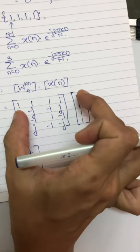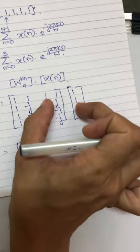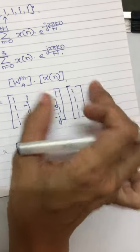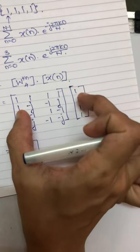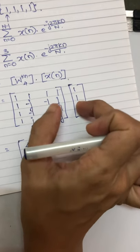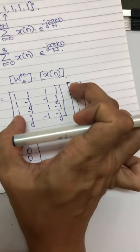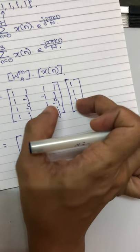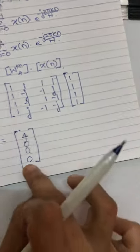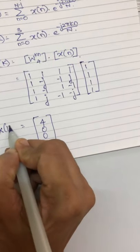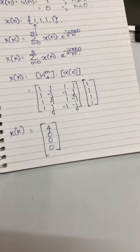And then the next row: 1 into 1 is 1, minus j, minus 1, plus j. After adding the answer will be 0. Similarly here 1 minus 1 will be 0, again plus 1 minus 1 will be 0. Even here 1 minus 1 will be 0, plus j minus j will be 0. So our x(k) is 4, 0, 0, 0.